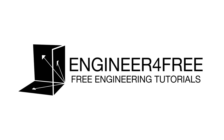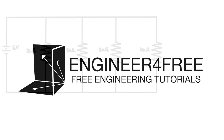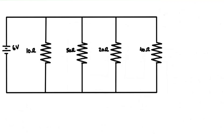Hey, welcome back. In this video I just want to go over one more example of a current division circuit. Here we have four parallel resistors and one single voltage source.